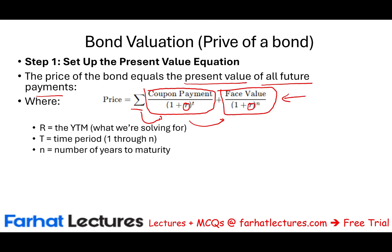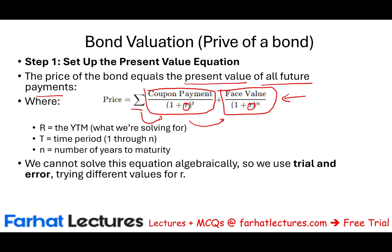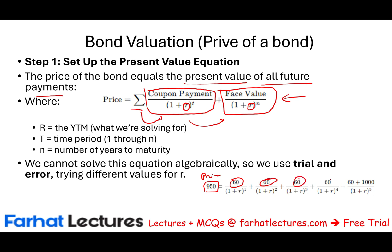T is the time period and N is the number of years. Let's take a look at this example. We paid $950 for a bond — that's the price today. This bond is paying $60 annual payment for five years, so five years remain. At the end of five years, we'll get $1,000. So how do we know how much we are earning? We know everything except R, the rate of return.